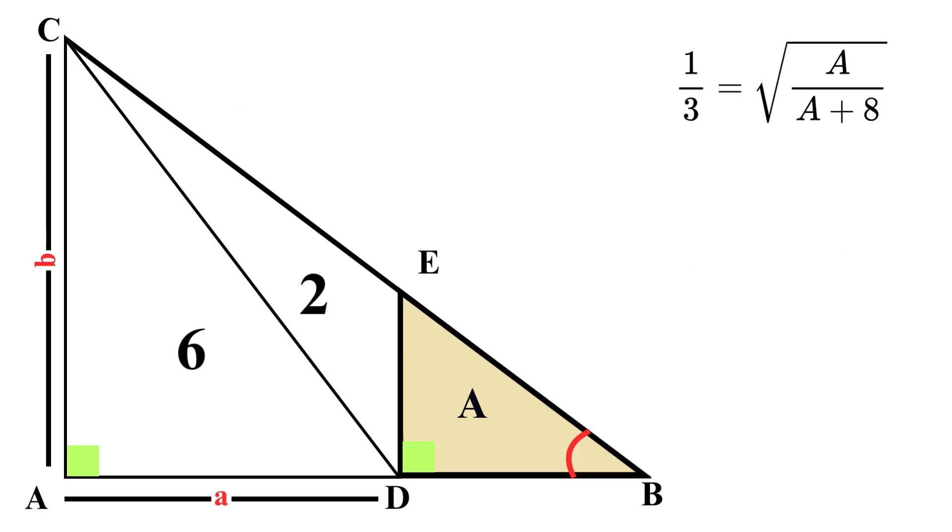This gives us 1 over 3 equals the square root of A over A plus 8. We simplify this equation by squaring both sides. From this, we get 1 over 9 equals A over A plus 8.